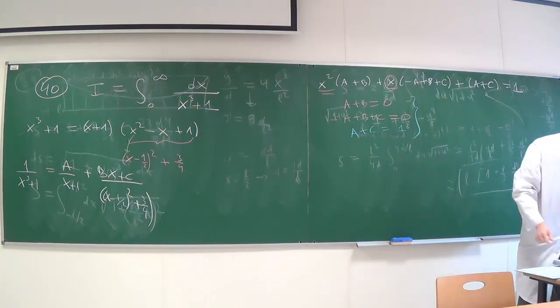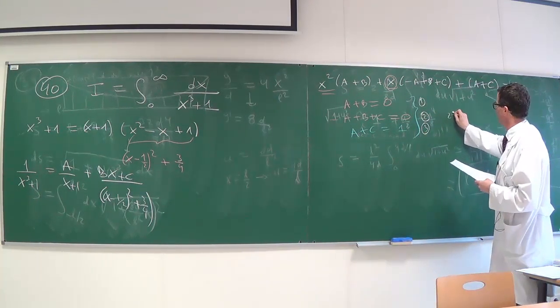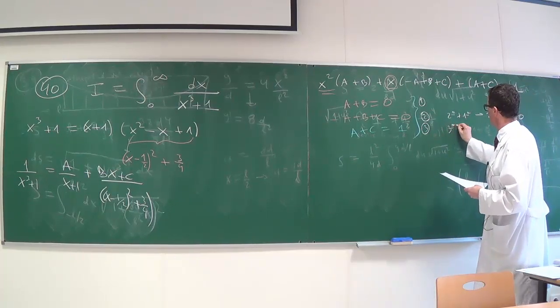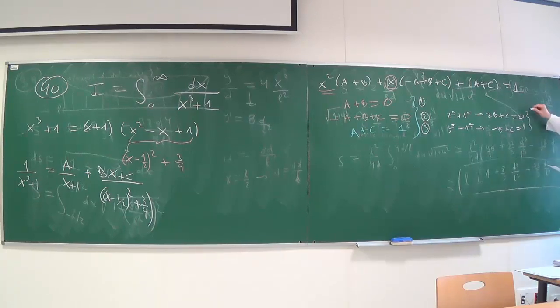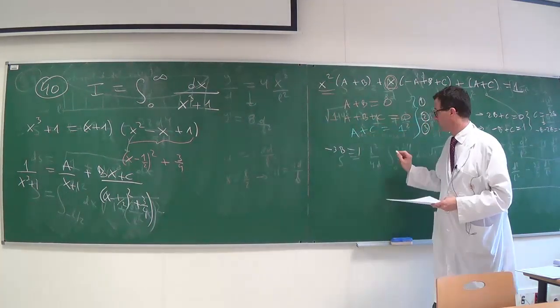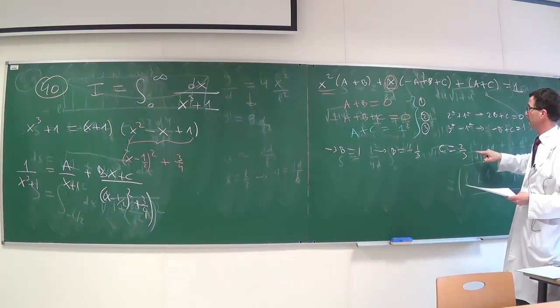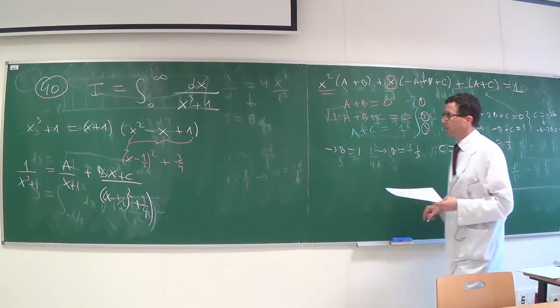And we need to find a, b, and c. I multiply a by this, I multiply bx plus c by x plus 1, and we find the following equation: x squared times (a plus b) plus x times (minus a plus b plus c) plus a plus c equals 1. And now we equate all the terms. Here there is a term in x squared that we don't have. Therefore, a plus b has to be 0. We also see a term in x that doesn't appear on the right, it is 0. So minus a plus b plus c is zero. And finally, we have here a plus c without any x, which is equal to 1. So a plus c is 1. Three equations.